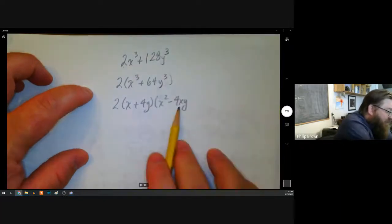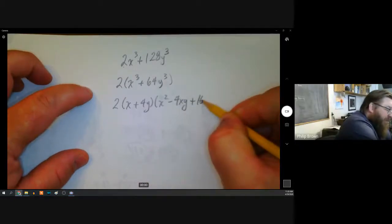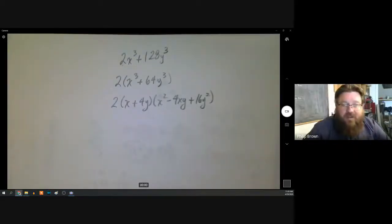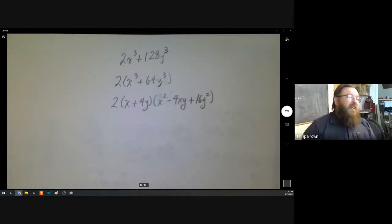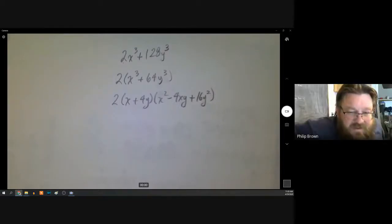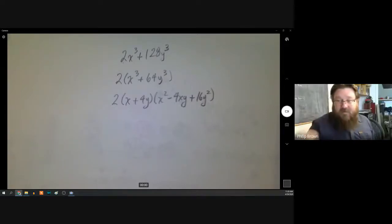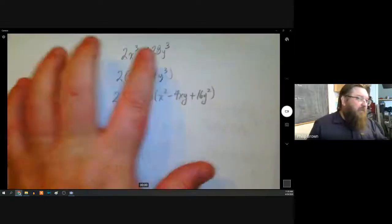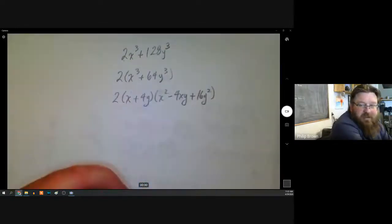Another tip: if you put terms in descending order — like alphabetical order — it'll usually keep you out of trouble and you won't make as many mistakes. If you can take a common factor out of both terms and you're left with a cube and another cube, then you'll have either a sum or difference of cubes.